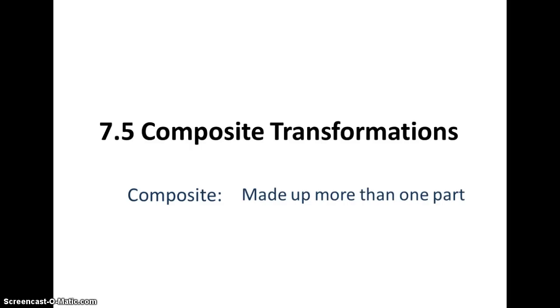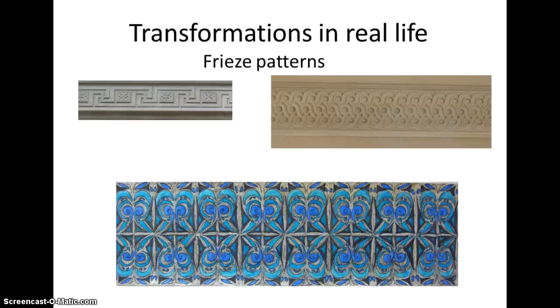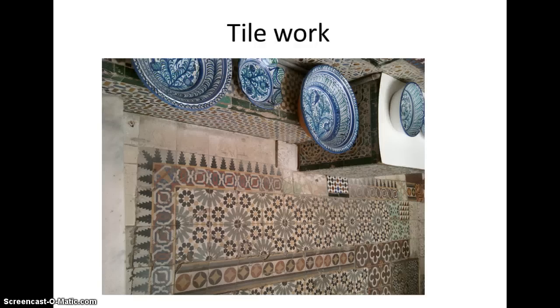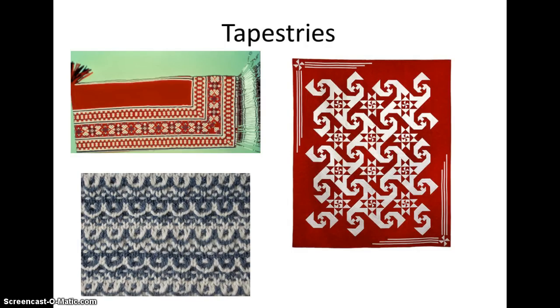We see composite transformations in real life all around us because the human brain loves patterns. So here's an example, these are called frieze patterns, and these are smaller tiles pieced together to form intricate patterns. You find these along the edges of buildings and doors. Here's some tiling on a floor, and notice again the lines of symmetry and the rotation as each tile shifts. And of course, we love looking at these patterns in intricate clothing and tapestries as well.